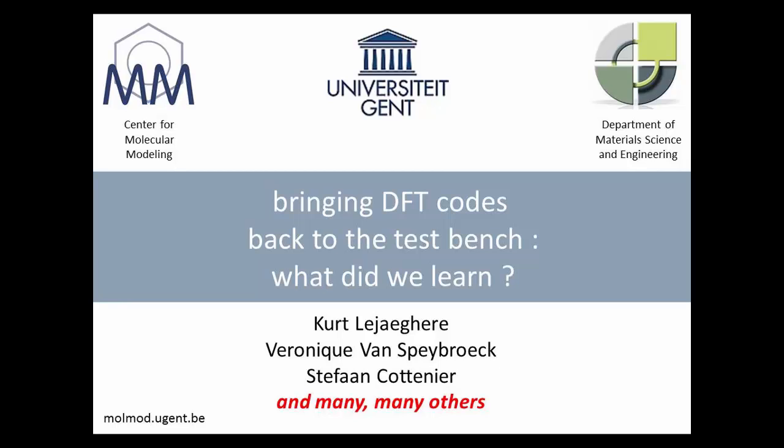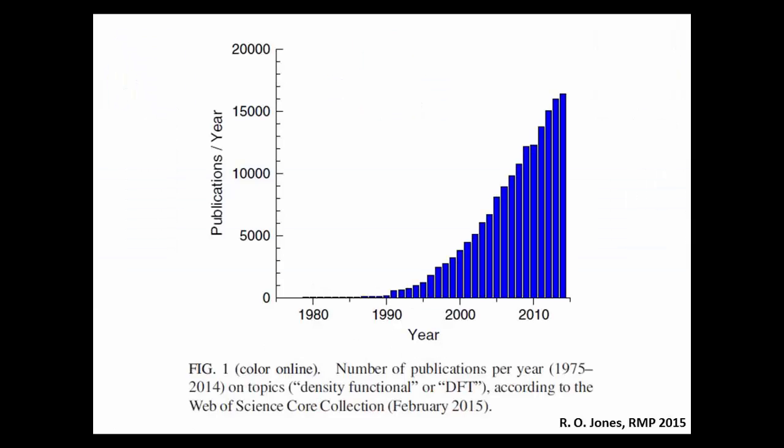One of the first graphs in this paper was this one, a type of graph you have surely seen before, that shows the number of DFT-related publications per year as a function of time. No surprise, but I was struck by the absolute numbers. If you look at this, 15,000 publications per year.